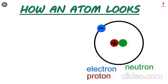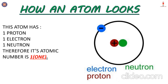Having learnt about these particles, let us now see how they are placed in the atom. As previously mentioned, the proton and the neutron are right at the center, with the electron circling around them. Here we can see that this particular atom has 1 proton, 1 neutron, and 1 electron. So the atomic number of this particular atom would be 1, and hence we can conclude that this is an atom of hydrogen. Since there is 1 proton and 1 neutron, the atomic mass of this particular atom will be 2.